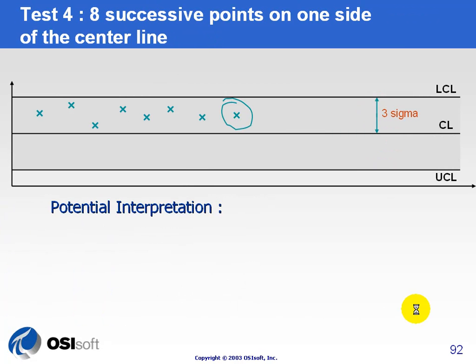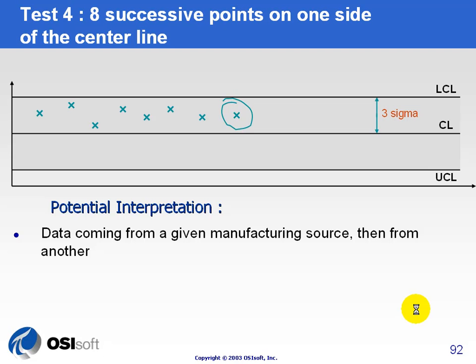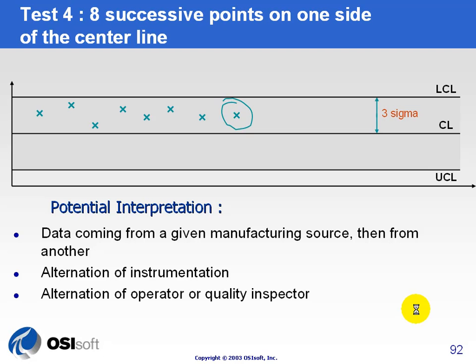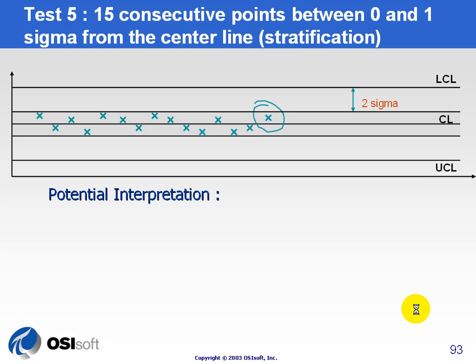Test four, where we have eight successive points outside the center line, could be because the data is coming from the wrong manufacturing source. You think you're getting one set of data, but in fact everything you're getting is from a different quality tag or different manufacturing tag, and things are going to be outside what you would expect centered around the center line. If you've got instrumentation that's incorrect, or operators are changing back and forth and people are running or inspecting it differently, you'd find those patterns.